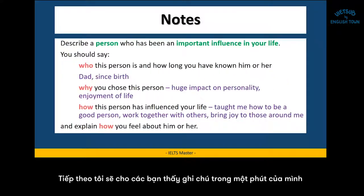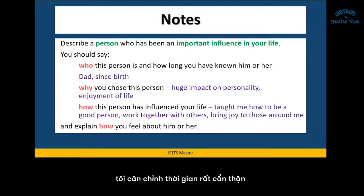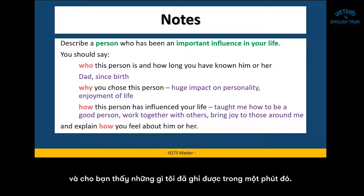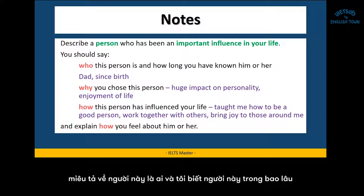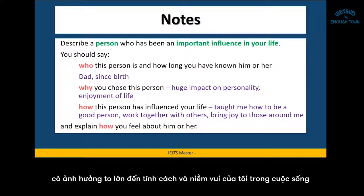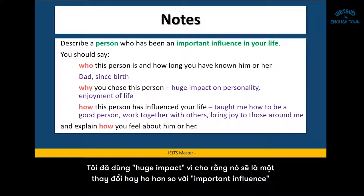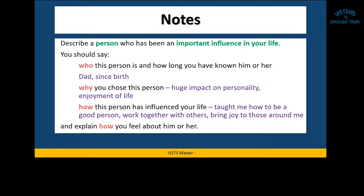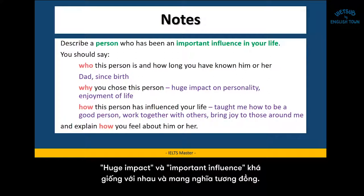Next, I'm going to show you the notes that I made in one minute. I timed myself carefully to only take one minute — I wanted it to be realistic. So I wrote down: dad, since birth — for who this person is and how long you have known him or her. And then for why I chose this person: huge impact on personality, enjoyment of life. I wrote 'huge impact' because I thought it would be a helpful change instead of 'important influence' and show off a little vocabulary knowledge. Huge impact, important influence — these have very similar meanings.